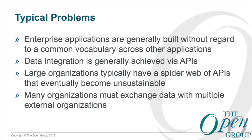So what are some of the typical problems? First of all, enterprise applications within the stovepipe, or silo, of one enterprise are generally built without regard to a common vocabulary across those applications. You typically go out and buy some vendor product, plug it in, and have to deal with all the APIs tying that application to the other applications it has to interface with. Large organizations — I came from Lockheed Martin, a very large organization with thousands of applications — so our spider web was tremendous.